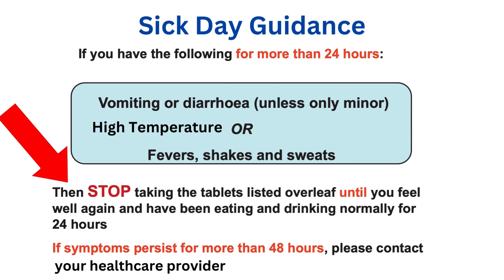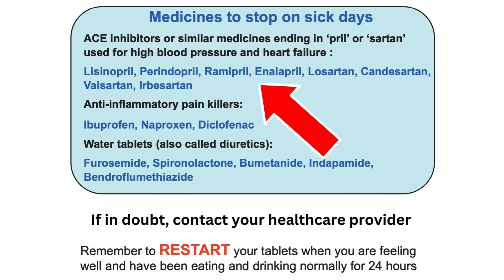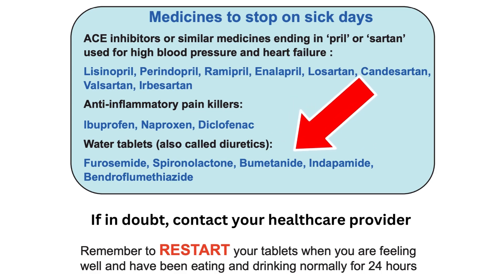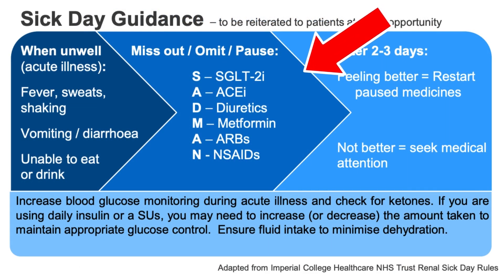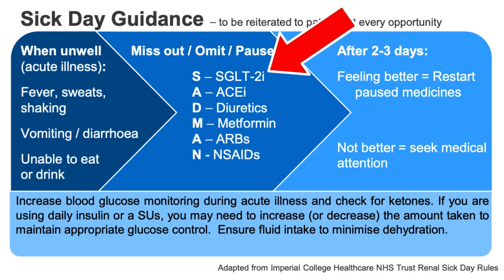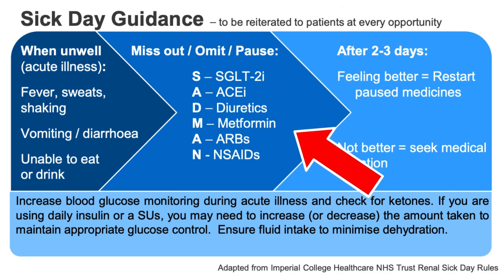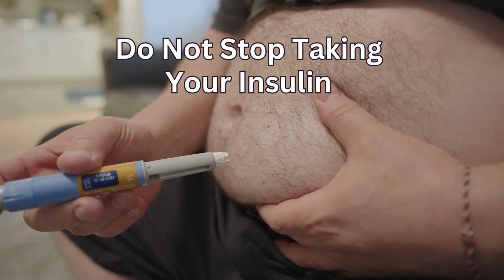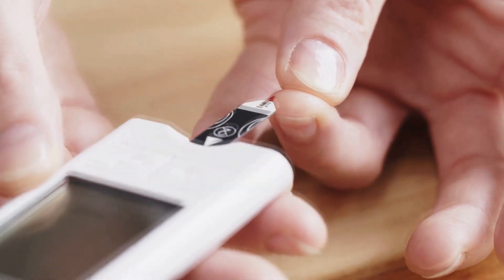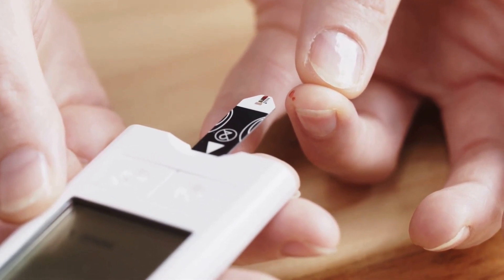You should temporarily stop the following medicines: blood pressure pills such as ramipril, lisinopril, losartan, or medicines ending with -artan or -pril; diuretics such as furosemide, bumetanide, spironolactone; SGLT2 inhibitors like canagliflozin, dapagliflozin, empagliflozin or ertugliflozin if used for diabetes or kidney disease; and other diabetic medications such as metformin. Do not stop taking your insulin if you have diabetes, but increase the number of times you check your blood sugar levels — if they run too high or too low, seek medical advice.